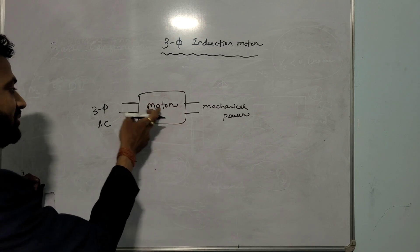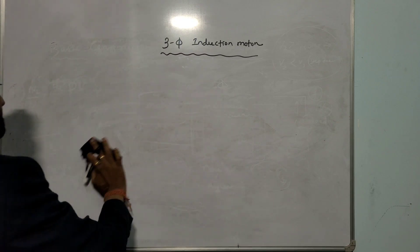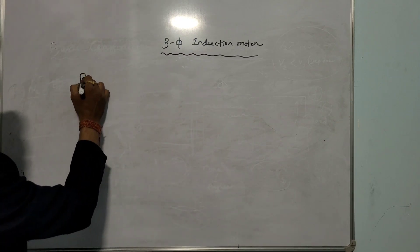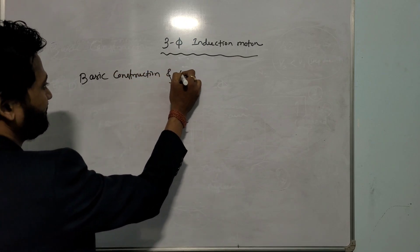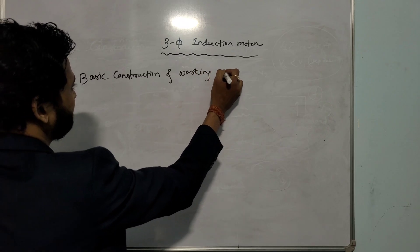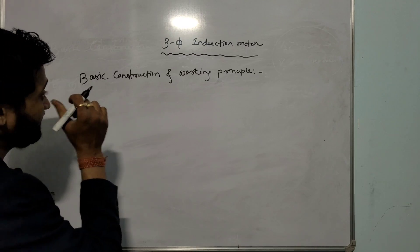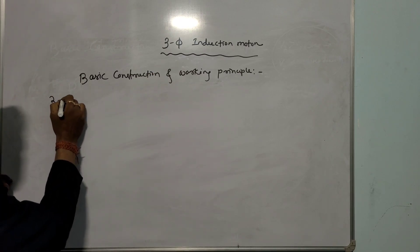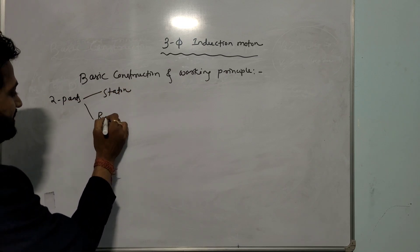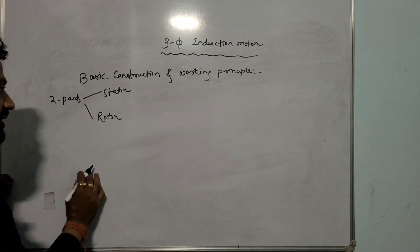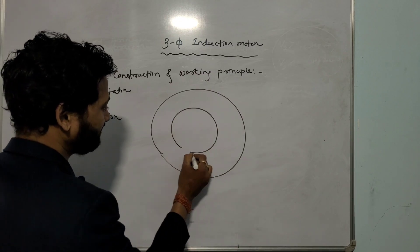So the overall definition: it is a motor which converts 3-phase AC to mechanical power. Coming to basic construction and working principle — the 3-phase induction motor has two parts: one is the stator and the second is the rotor. The stator is the stationary part and the rotor is the rotating part. The outer part is called the stator and the inner part is called the rotor.